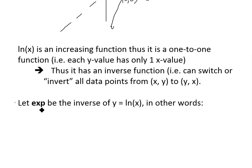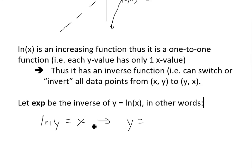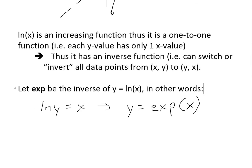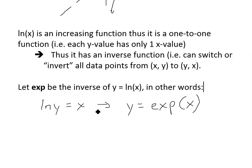I defined exp(x) as the inverse of y equals ln of x, because the inverse exists. In other words, if you have ln(y) equals x, we switch the x and y's so that y is equal to the inverse — and we write it as a function of x. This is basically just the definition of an inverse function.